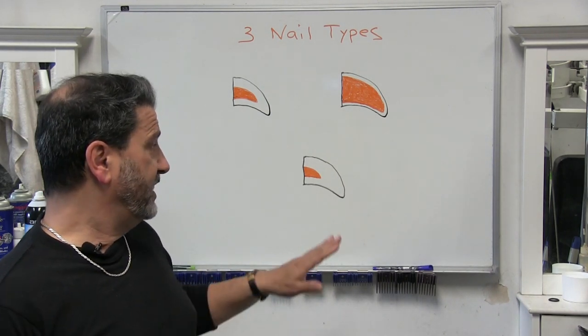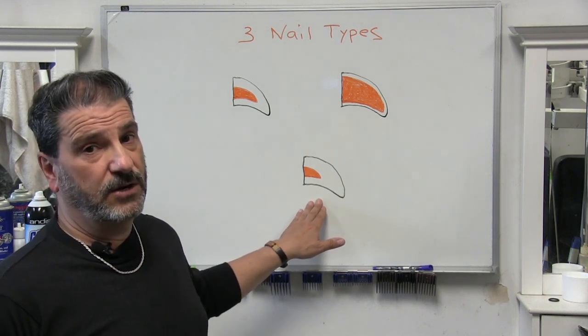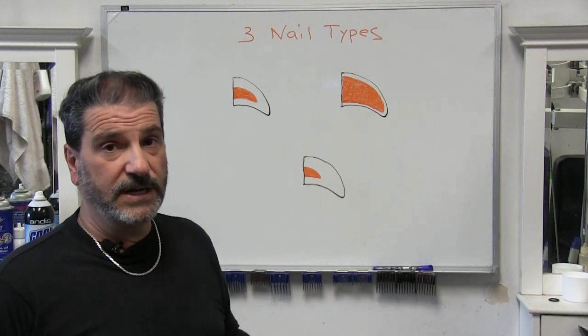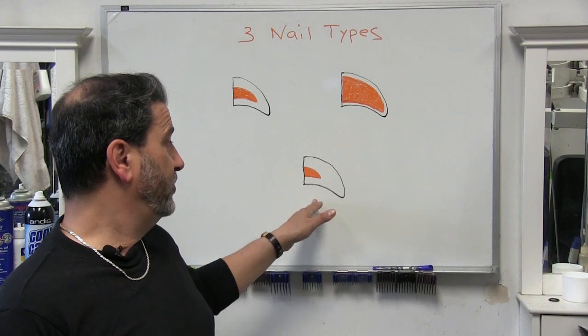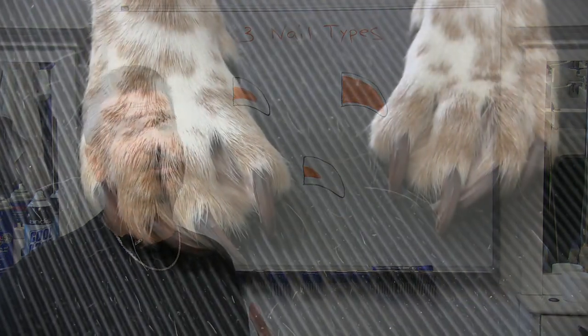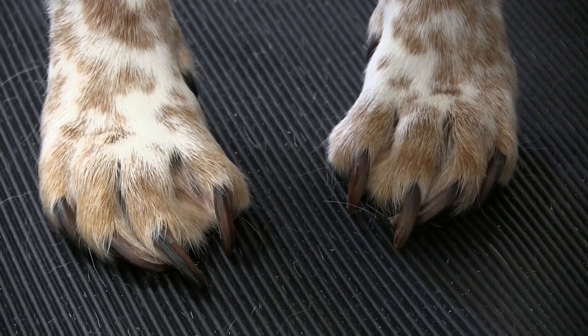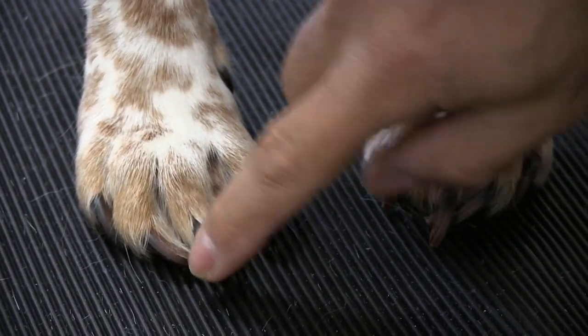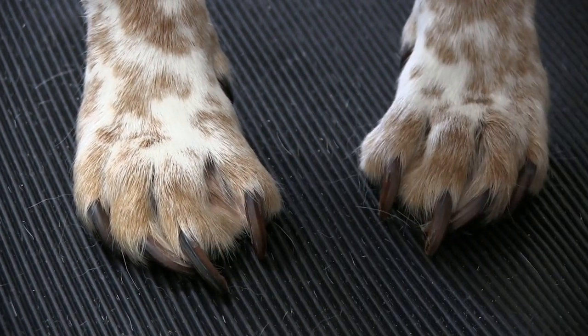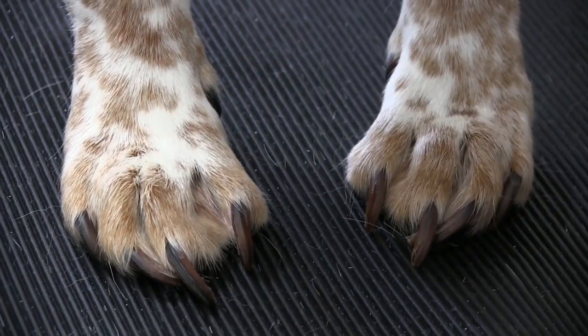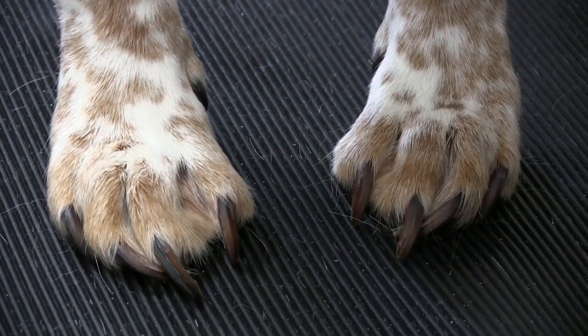So second, we're gonna go down here and we're gonna call this one the dagger. And this nail you're going to find in some of our videos, in our nails too long videos, where the nail just grows excessively long and the vein doesn't. And you'll find this nail a lot in, say, like Westies, your Jack Russell Terriers, even like your Chihuahuas.